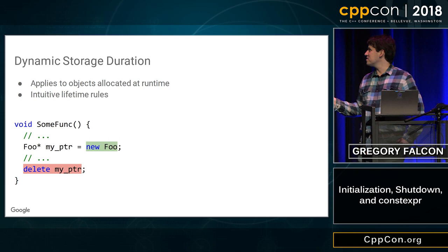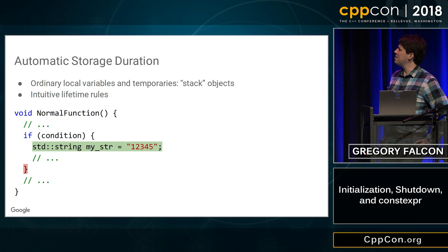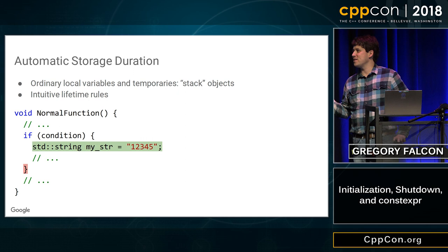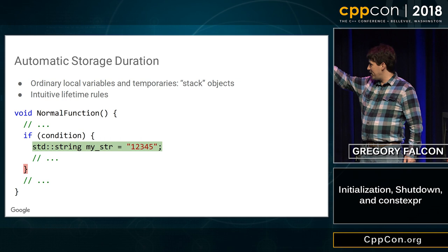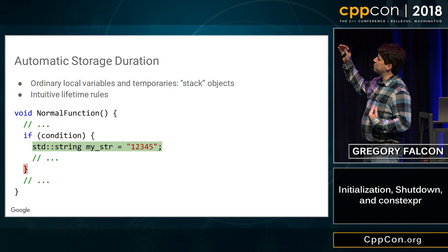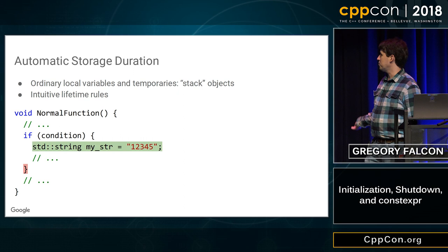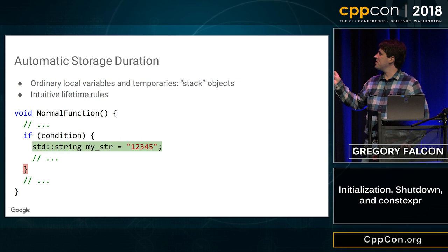The second storage duration is automatic storage duration — objects that live on the stack, ordinary local variables. Most temporaries are allocated on the stack. You deal with locals so often that you have a good intuition about how these work. A local variable's lifetime begins at its initialization, and the object gets destroyed when you exit the block of code it's in. It doesn't matter how you leave the block — you can fall off the bottom, early return, or throw an exception. Local variables get destroyed in the reverse order that they were constructed.